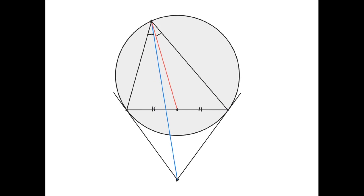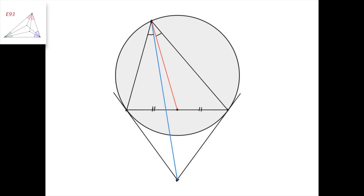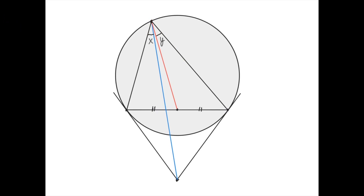Why the symmedian? Because it turns out that the symmedian and the median are always isogonal conjugates with respect to the angle they come from in the triangle.